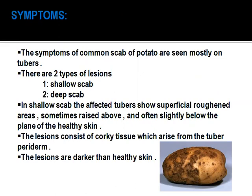The symptoms of common scab of potato are seen mostly on tubers. There are two types of lesions: shallow scab and deep scab. In shallow scab, affected tubers show superficial rough areas that sometimes rise above and often are slightly below the plane of healthy skin.